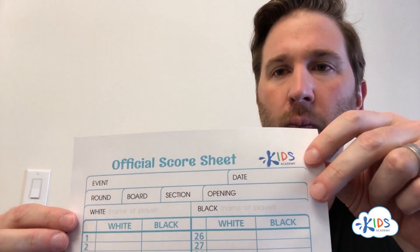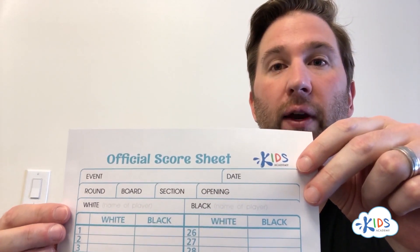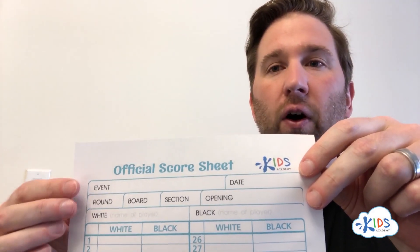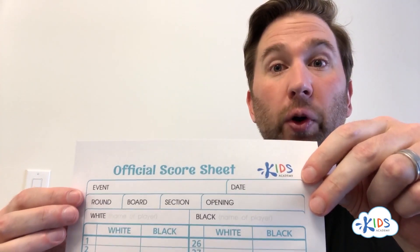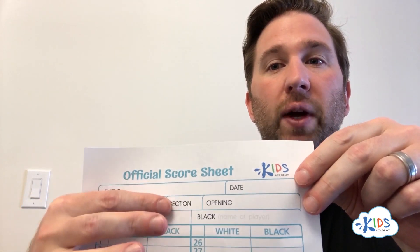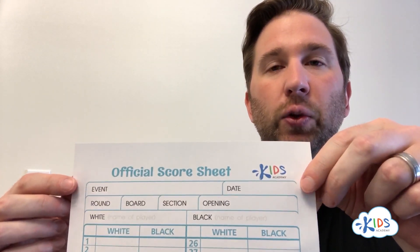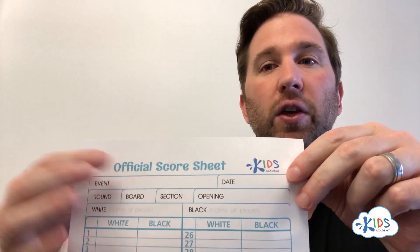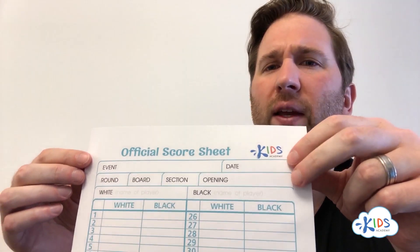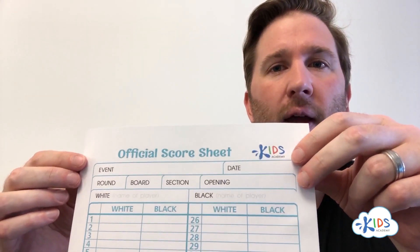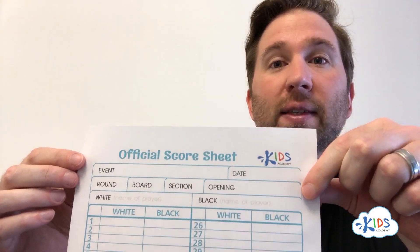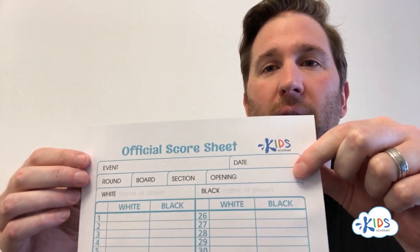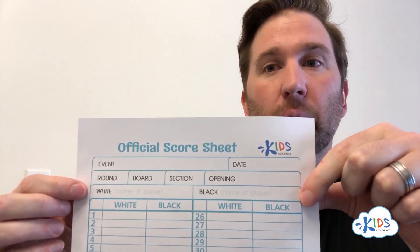Before the game starts, they'll post the pairings — the information with your board number, your opponent, and your color outside the hall. You'll find your name, your board, your color, and go sit down. You can write your section here. Usually a tournament has several sections — let's say you're playing in the under 700 section, you would write U700. And the opening — you don't really need to worry about the opening, but just know that the different setups we use have different names. If you wanted to write your opening name here, you can.